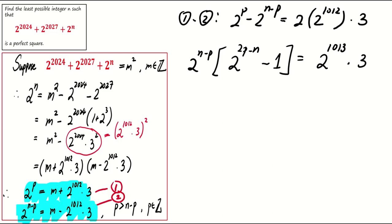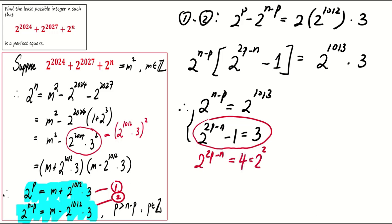This implies that 2 to the power of n minus p equals 2 to the power of 1013 and 2 to the power of 2p minus n minus 1 equals 3, which is equivalent to saying 2 to the power of 2p minus n equals 4, which is 2 to the power of 2.